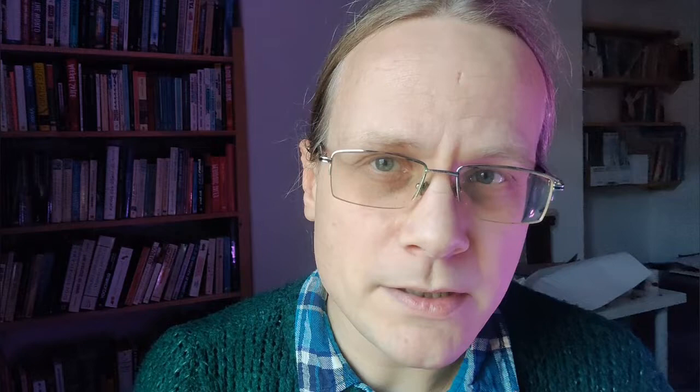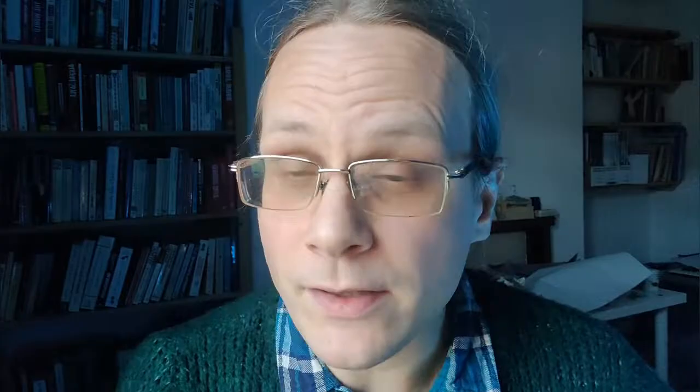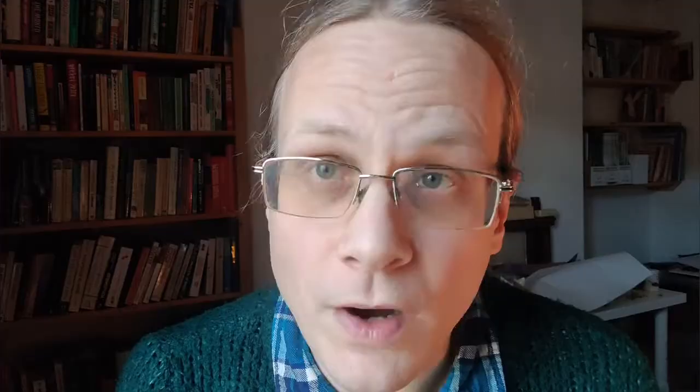The peak of L cells' response is actually a wavelength that we would usually call yellow, and the ranges of the two types overlap greatly. Genuinely red light only starts at considerably higher wavelengths than L's peak response, when the waves get too long to trigger the M cells as well. S cells respond preferentially to the shortest light waves, known as blue or violet, but they also respond to a range of wavelengths shared with both of the other two cones.